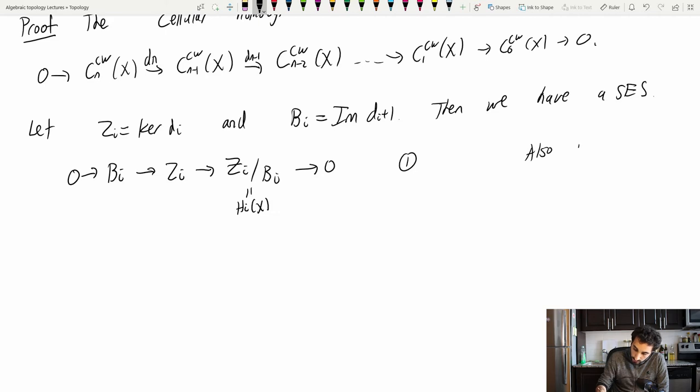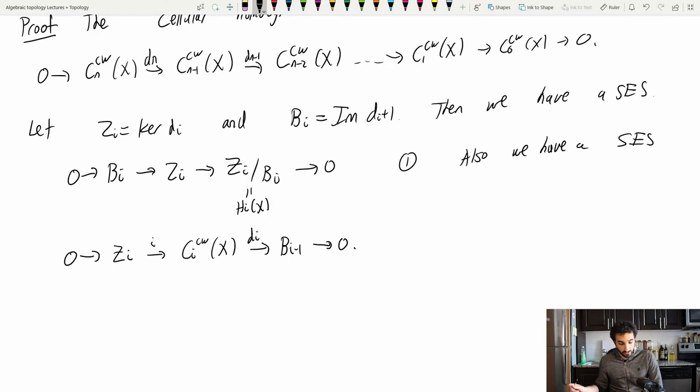Now, also, we have another short exact sequence, which looks like 0 goes to Zi. And this is just an inclusion into Ci CW of X.